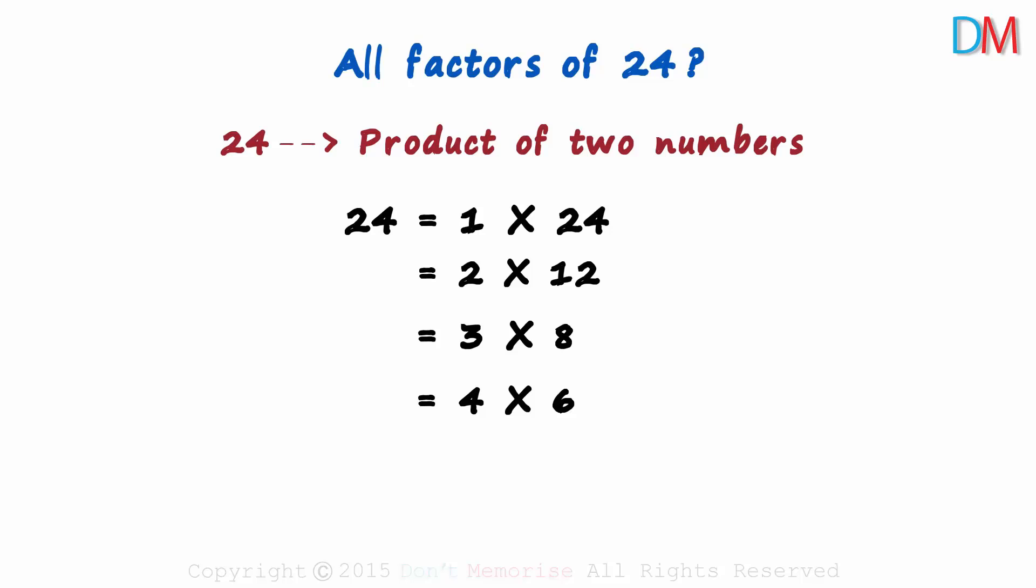Always use this logic when you are writing a number as a product of two numbers. Start off with 1. Every number is obviously divisible by 1. Write that product first. Then see if the number is divisible by 2, which is the next natural number.